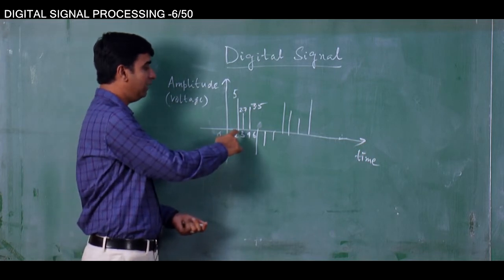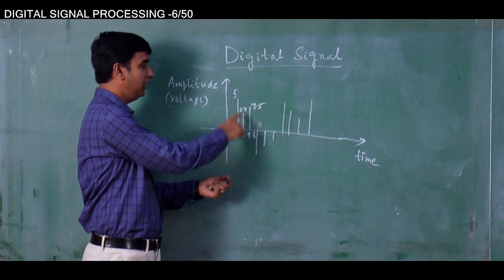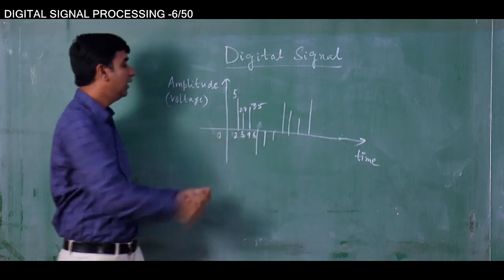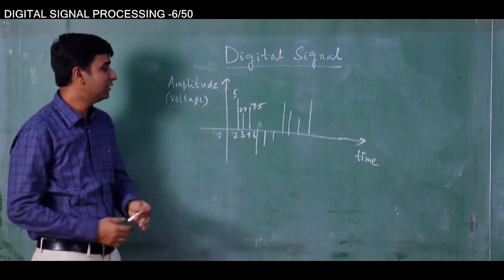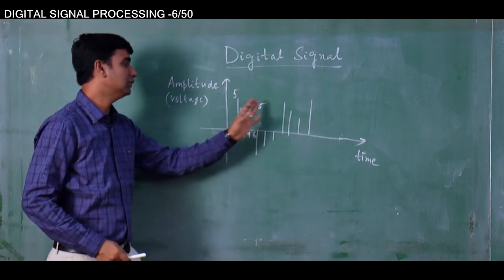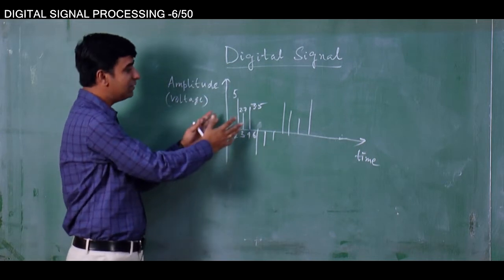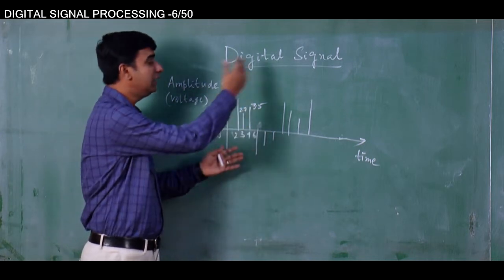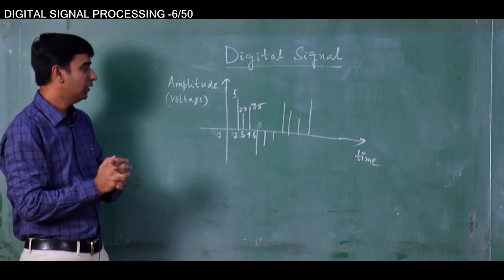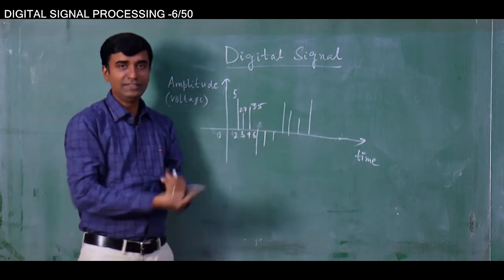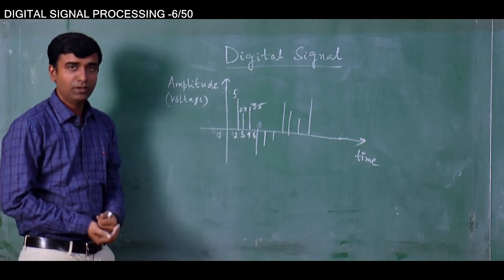At this point of time it has got a value; at the second instant of time it has got a value of 5; at the third instant of time it has got a value of 2.7; at the fourth it has got a value of 3.5. So all these samples are taken from a continuous time signal which is an analog signal. This is a digital signal — that is the definition.